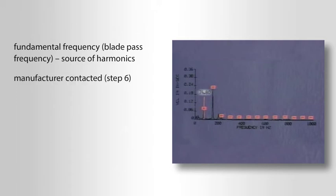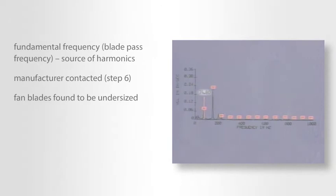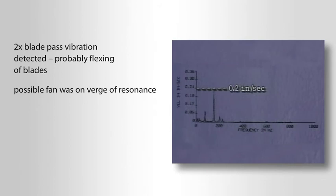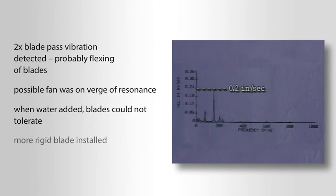Finally, the manufacturer was contacted — step six. Numbers were rechecked and the fan blades were found to be undersized. The two-times blade pass vibration detected when no water was flowing was probably a flexing of the blades. So it's possible that the fan was on the verge of resonance. When the water was added, the blades could not tolerate the force. A more rigid blade was installed.